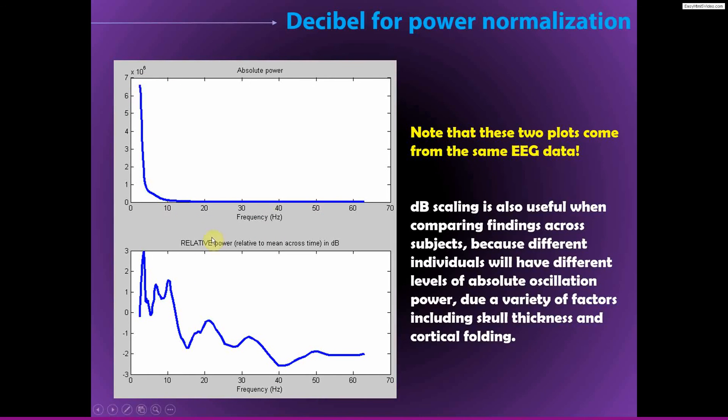Again, these two lines come from the same data. Here's with the absolute power, and the 1 over F shape is so strong, you really can't interpret any of these results. But now you look at the relative powers, so relative to the baseline, and now you can see the power spectrum that looks actually very typical for EEG. You see some delta, theta, alpha, beta, low gamma, very interpretable, meaningful results that we can see in the decibel normalized plot that we don't see in the raw power plot.